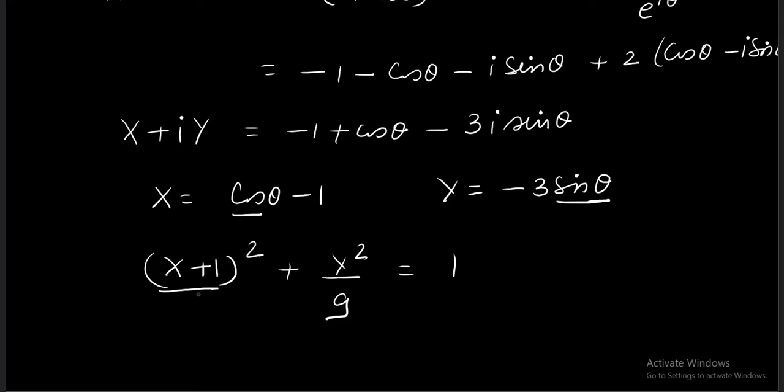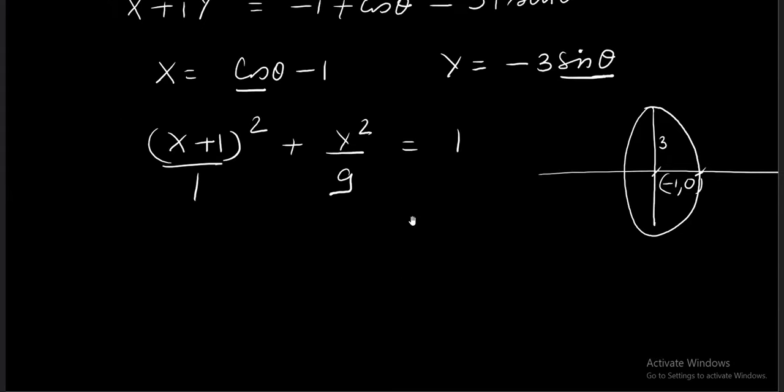It turns out to be an ellipse. This ellipse will have the center at minus 1 comma 0. And this will be a vertical kind of ellipse. Because x-axis it intersects at distance one from the center, while here the distance will be three. So this is the locus of omega that we wanted to calculate.